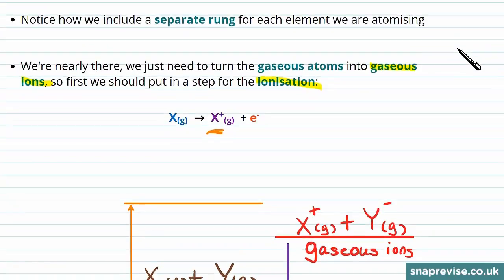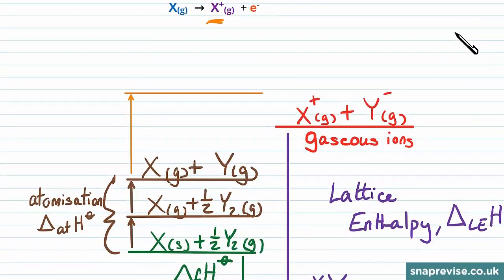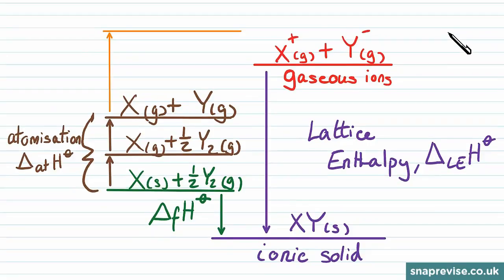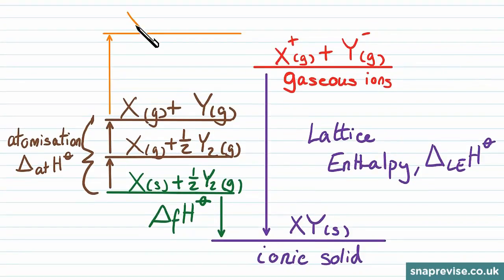So again, because energy is going into the system at this point, it's represented by an upwards arrow in the Born-Haber cycle. We're transitioning from the gaseous atoms to having a 1 plus X ion, which is also in a gaseous state. And in this step the Y doesn't change. And then the energy involved here is the enthalpy change of the first ionization, I1. So that's delta I1 H standard.